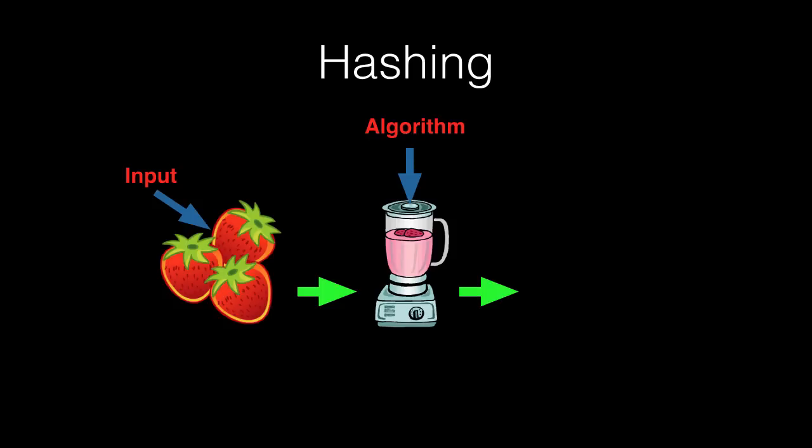When the strawberries are blended, you get a smoothie, which is like the crazy numbers and letters, which is called a hash.